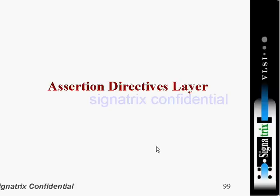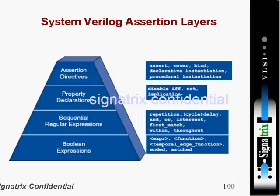Now we are going to discuss the final layer — the assertion directive layer. So far we have seen the boolean expression layer, sequence declaration layer, and property declaration layer. At the top we have assertion directives. The assertion directives include assert, cover, and bind.